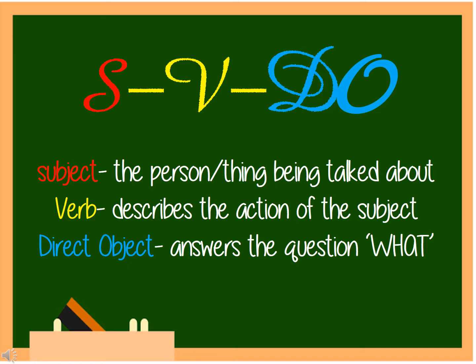Next is the Subject-Verb-Direct Object, or the SVDO pattern. Remember, the subject is the person or thing being talked about, the verb describes the action of the subject, and the direct object, or DO, answers the question 'what.'